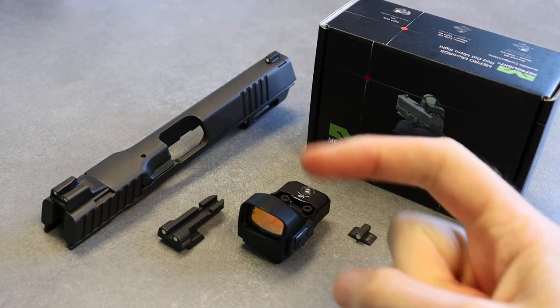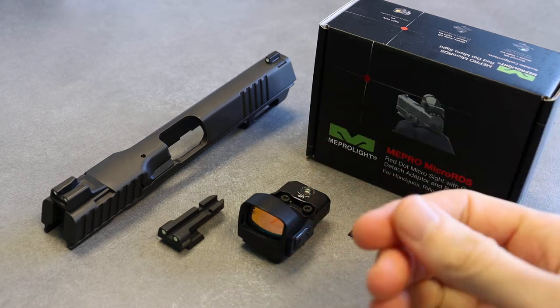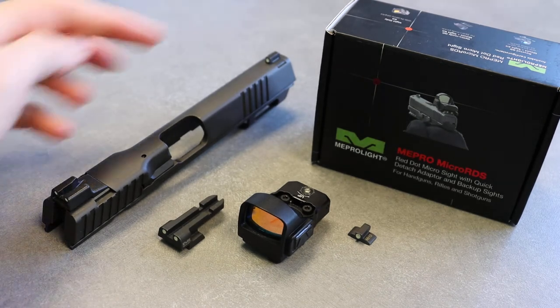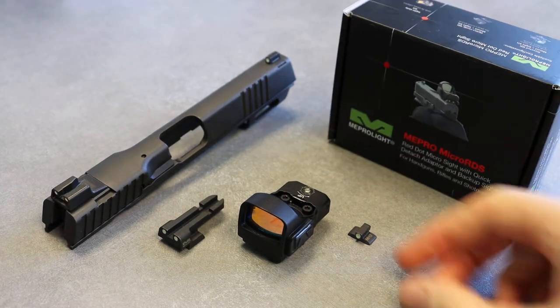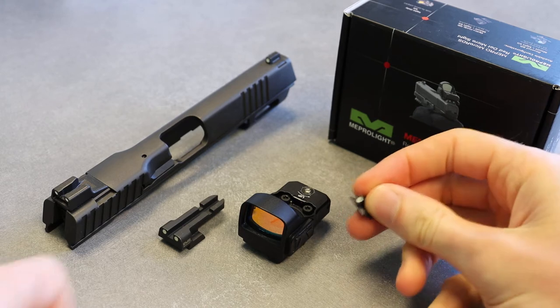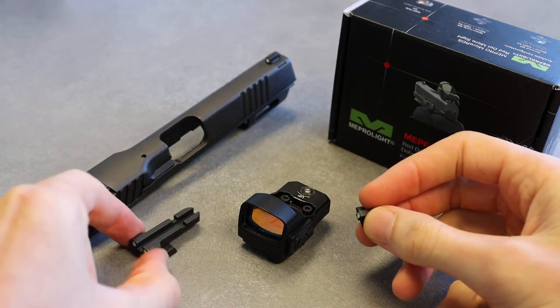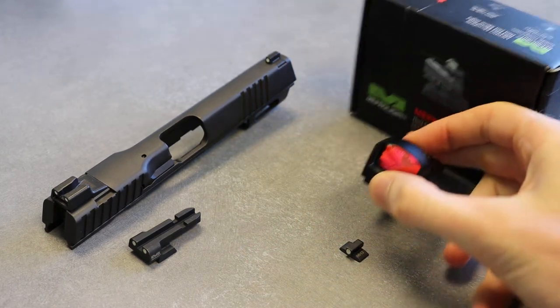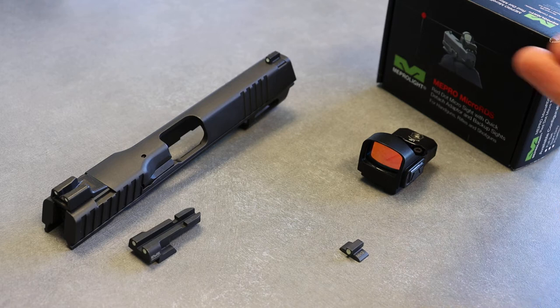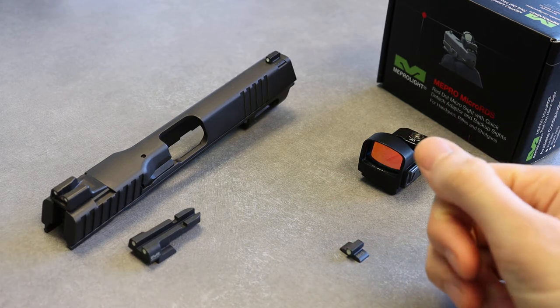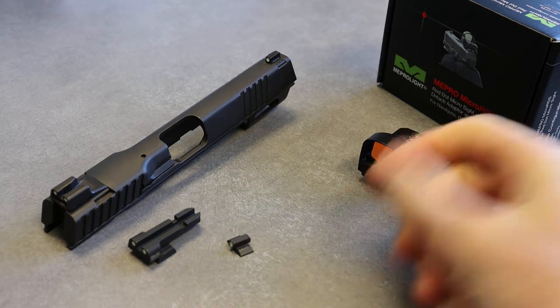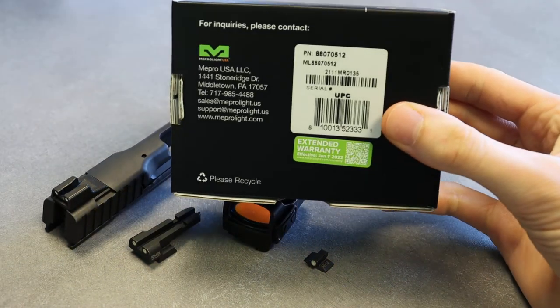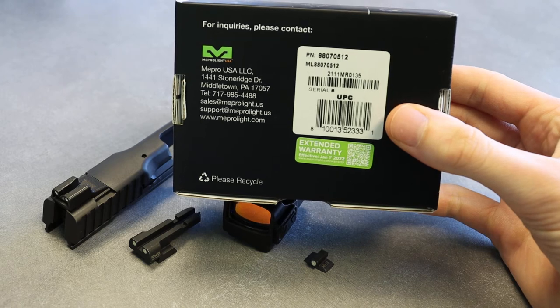Between the Jericho 941, which we also offer the micro RDS for, and now the Jericho 2 enhanced slide, IWI changed the dovetail cuts both front and rear, so Meprolite had to create different night sights. Jericho 941 sights will not work on an enhanced 2 and vice versa. The part number for this new Jericho 2 is 88070512.